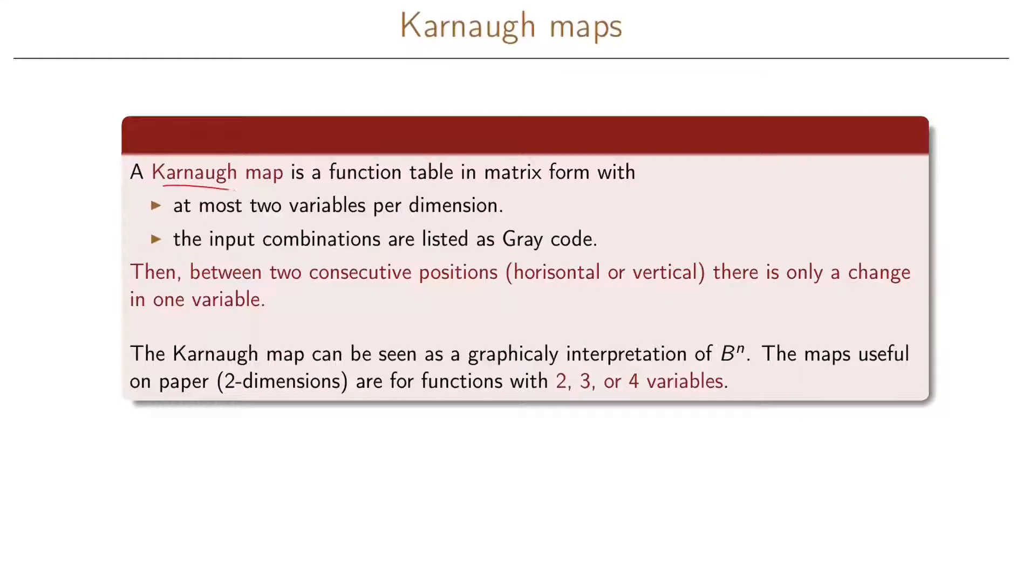A Karnaugh map is a function table in matrix form with at most two variables per dimension. And the input combinations are listed in this table as Gray code.